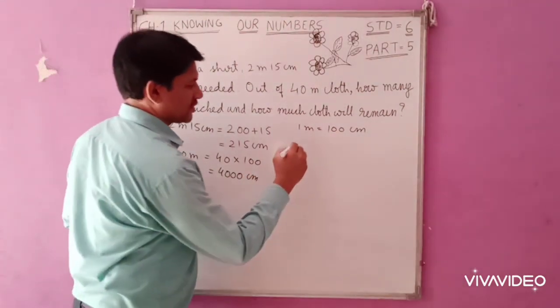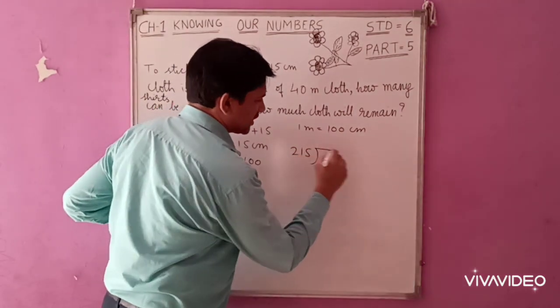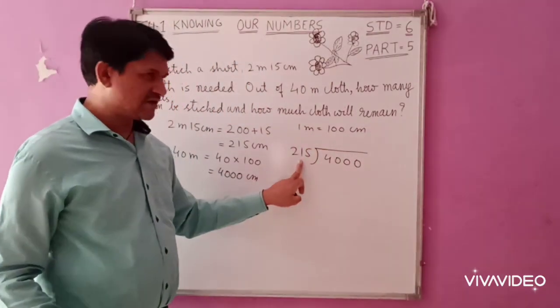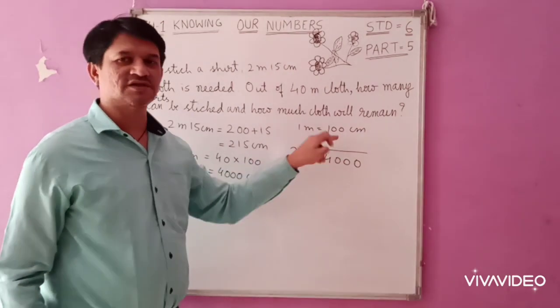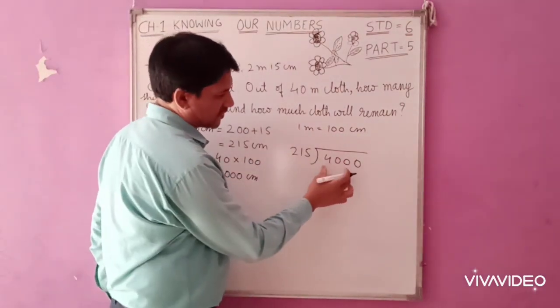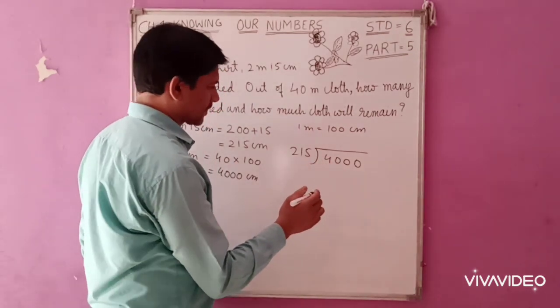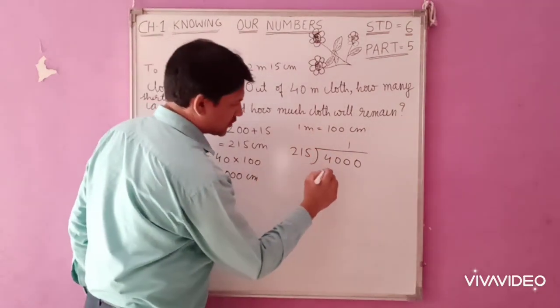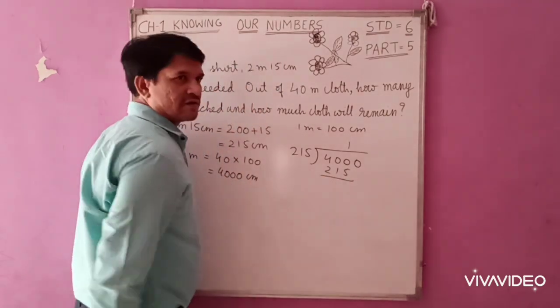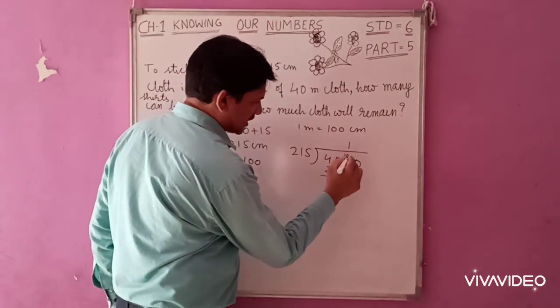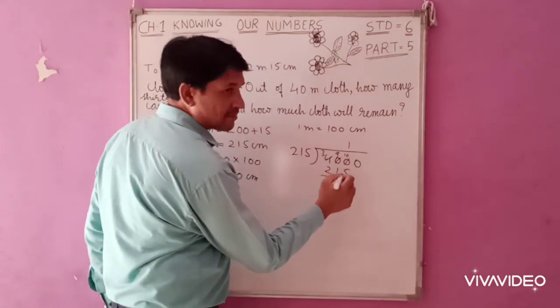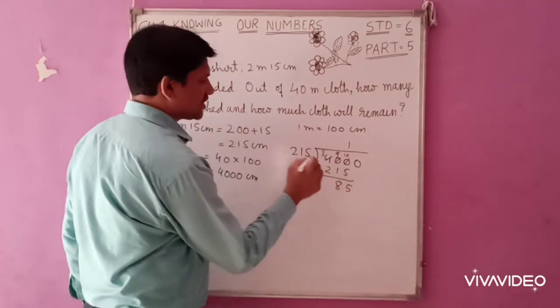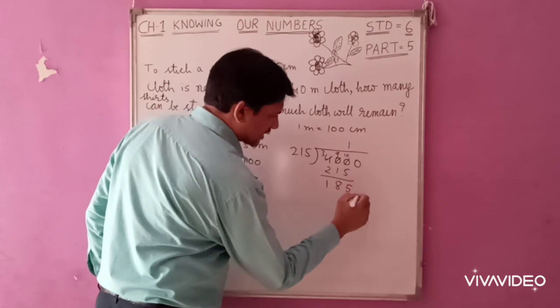Now divide these two numbers: 4000 divided by 215. This is the divisor, this is the dividend, and you get the quotient as the answer. First we need to prepare the division. 215 goes into 4000. It goes 10 times, so we subtract 2150 from 4000. 10 minus 5 is 5, 9 minus 1 is 8, 3 minus 2 is 1. Carry down this 0.